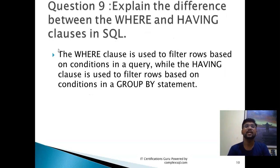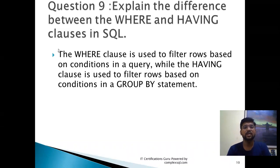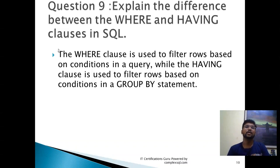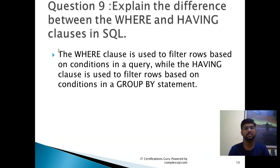Next question: Explain the difference between the WHERE clause and the HAVING clause in SQL. This is a commonly confusing question. The WHERE clause is used to filter rows based on a condition in the query, while the HAVING clause is used to filter rows based on a condition in a GROUP BY statement. You cannot use WHERE with GROUP BY aggregations; use HAVING instead. For a standard query like SELECT * FROM employees WHERE employee_number = 'xxx', use WHERE.